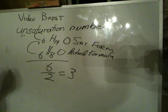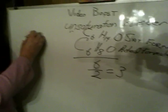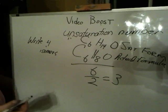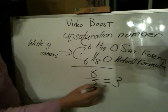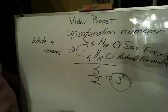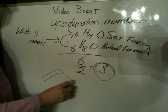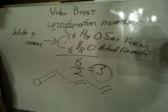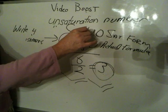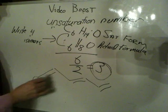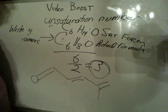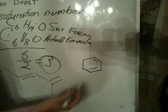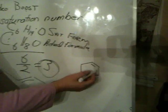So what does an unsaturation number of 3 mean in terms of writing isomers? Supposing my problem is to write 4 isomers — that's what I gave you as homework over the weekend. This tells me what I need to include in the structure. For example, I could just put 3 double bonds in the structure. Don't forget that the double bond can involve oxygen. I could also make a ring — that has an unsaturation of 3: 2 double bonds and a ring.